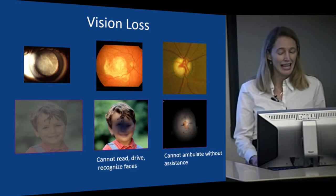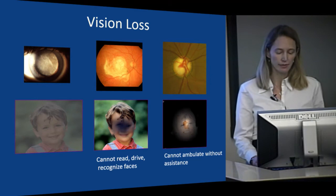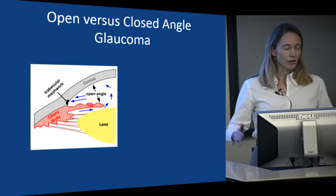Glaucoma is one of the few diseases that can lead not only to legal blindness — which is worse than 20/200 in the better eye — but actual no-light-perception vision, so complete blindness. There are just not that many eye diseases that do that. The two broad categories of glaucoma are open angle and closed angle glaucoma.